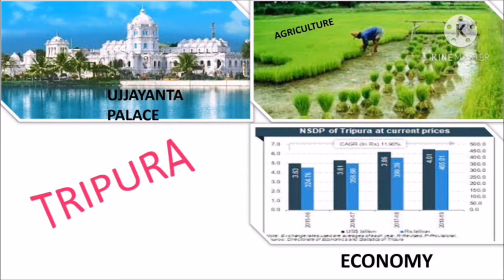Economy of Tripura: Agro-climatic conditions in the state are favorable for growing various fruits and horticulture crops. Tripura's pineapples and oranges are known for their unique flavor and organic nature. As per the third advance estimate of 2018-19, total fruit production in the state reached 5,55,473 metric tons, total vegetable production reached 8,13,378 metric tons, total plantation production reached 29,458 metric tons, and total spices production reached 30,220 metric tons. Tripura has vast natural gas reserves with high methane content of about 97 percent.